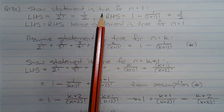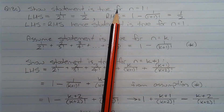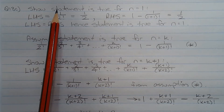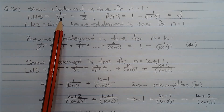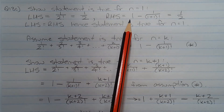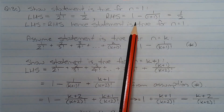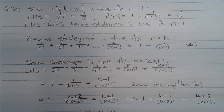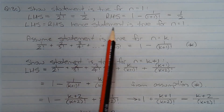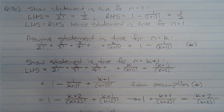The first step is to show the statement is true for some value of n, and in this case the smallest value we can test is n equals 1. When n equals 1, the left hand side equals 1 over 2 factorial which equals a half, and the right hand side equals 1 minus 1 over 1 plus 1 factorial which also equals a half. The left hand side equals the right hand side, hence the statement is true for n equals 1.